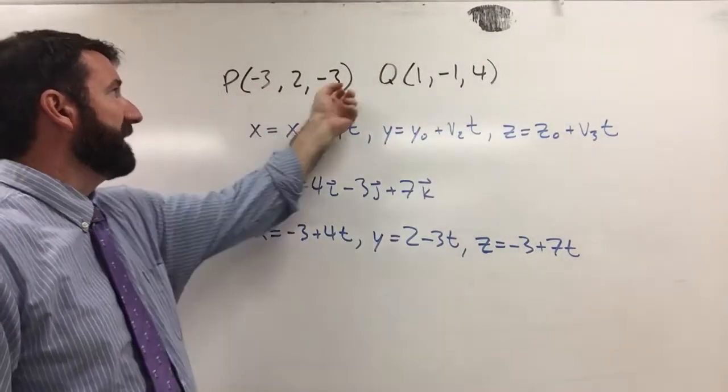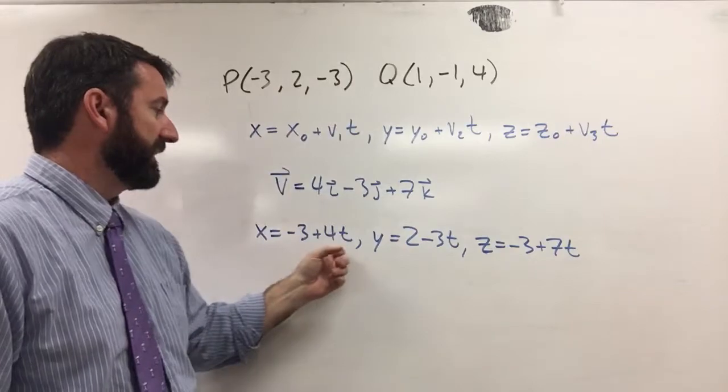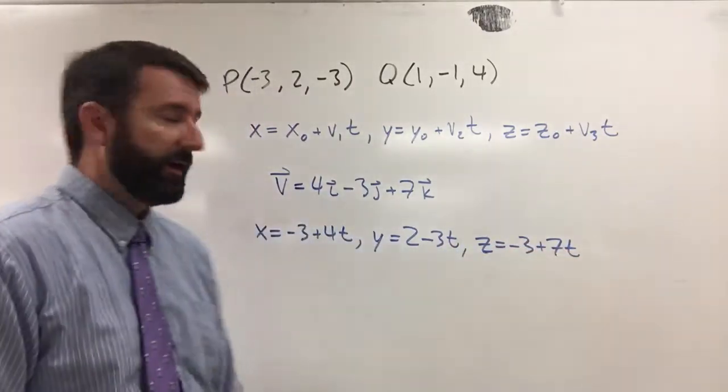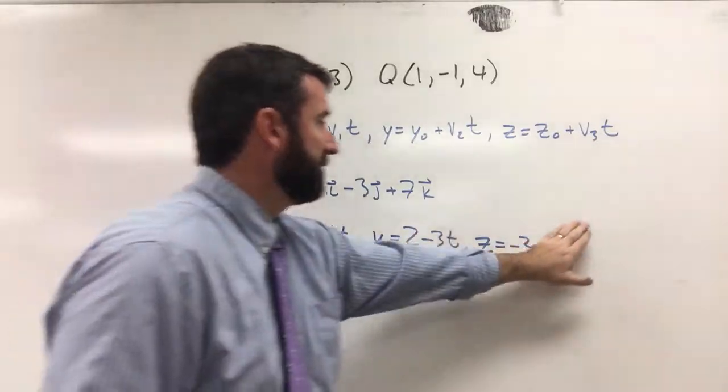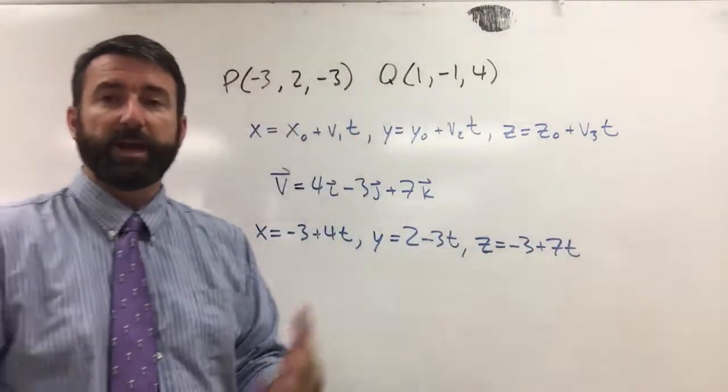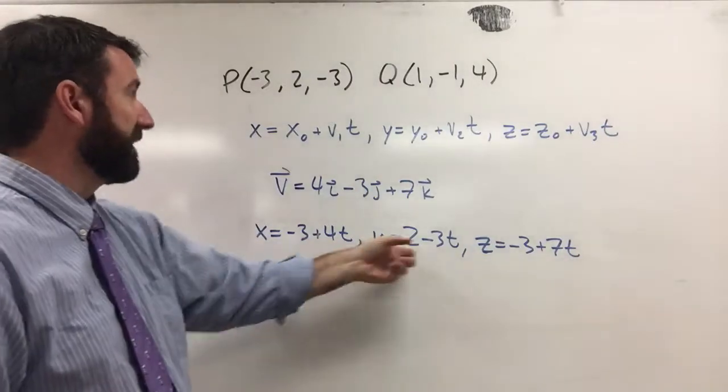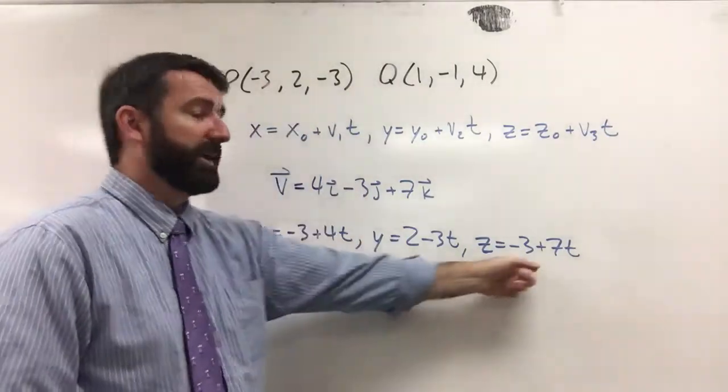We'll notice that we're going to get point P if we plug in 0 for t. If we plug in 0 there, we're going to get negative 3. Plug in 0 there, we get 2. Plug in 0 there, we get negative 3. And that shouldn't be any surprise because that point is where we got those numbers.